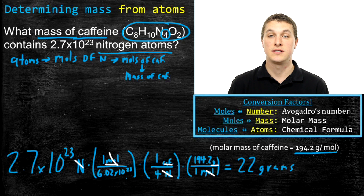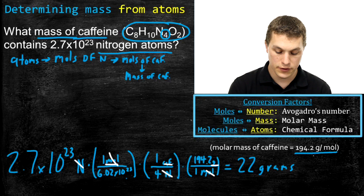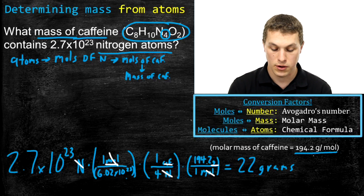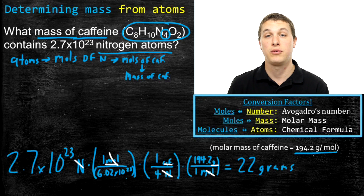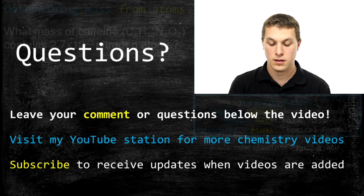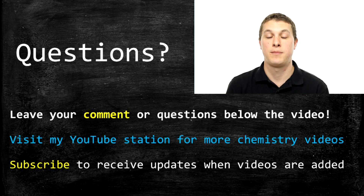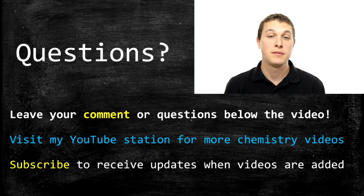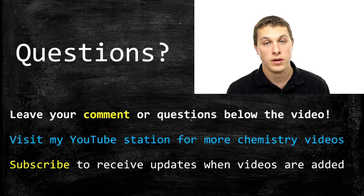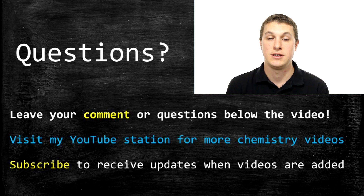Go ahead and plug that into your calculator to verify. Make sure to put Avogadro's number in parentheses in your calculator — otherwise you'll accidentally get something like 10 to the 40th, which is almost always wrong. The correct answer is 22 grams. Thanks for watching this episode of Real Chemistry on using chemical formulas as conversion factors. Please leave any questions below and visit my channel for other chemistry videos.